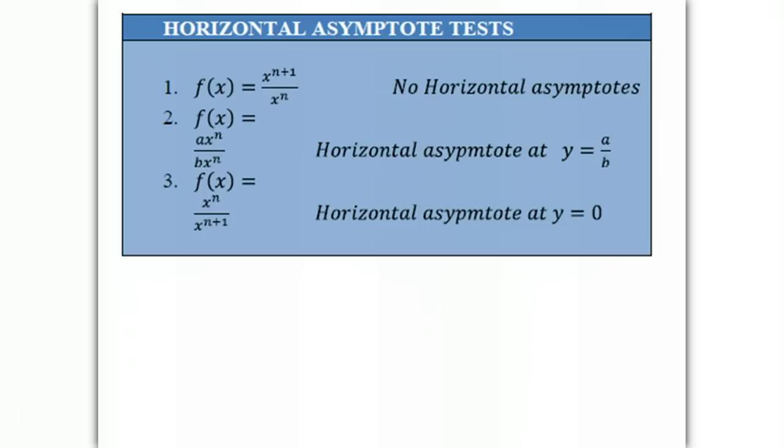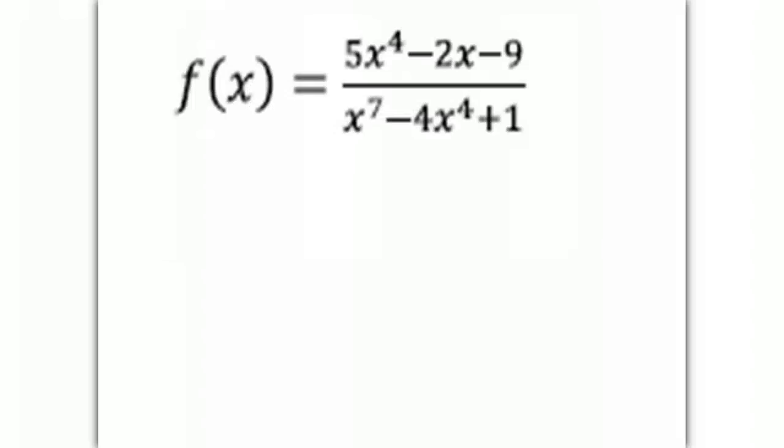The last example of horizontal asymptote tests will be when the numerator is smaller than the denominator. And when that happens, the horizontal asymptote will be at y equals 0. So an example of that.